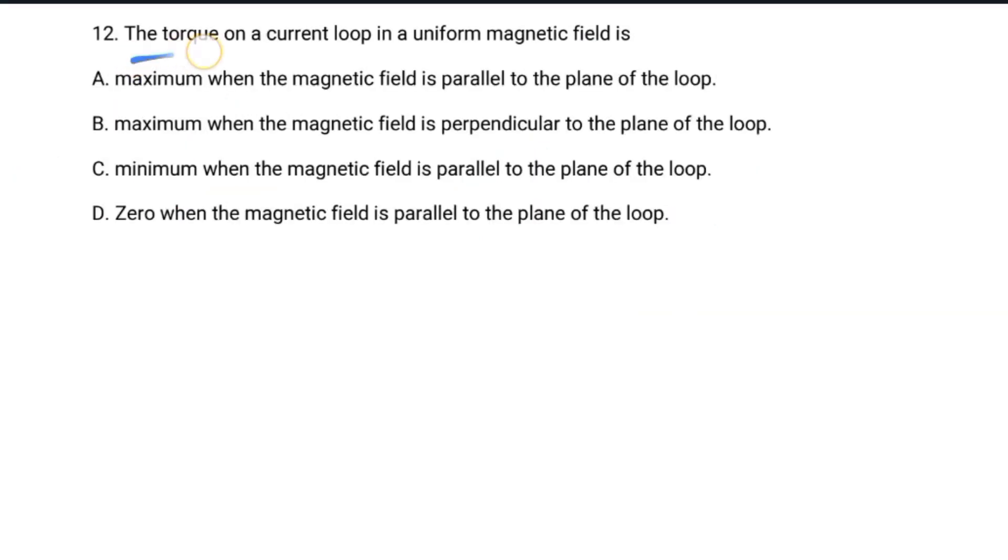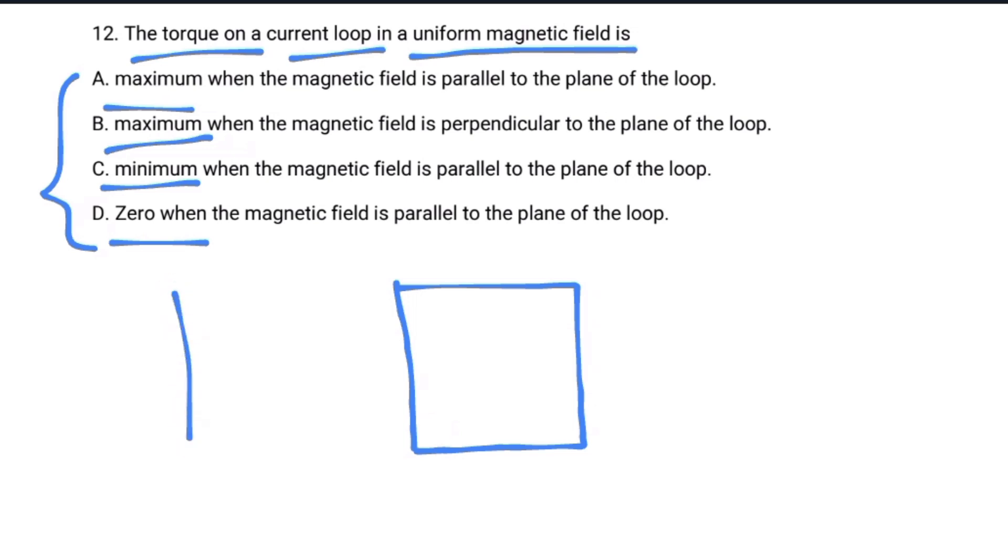Number 12: The torque on a current loop in a uniform magnetic field is? Is the torque maximum when the magnetic field is parallel to the plane of the loop, maximum when perpendicular to the plane, minimum when parallel, or zero when parallel?